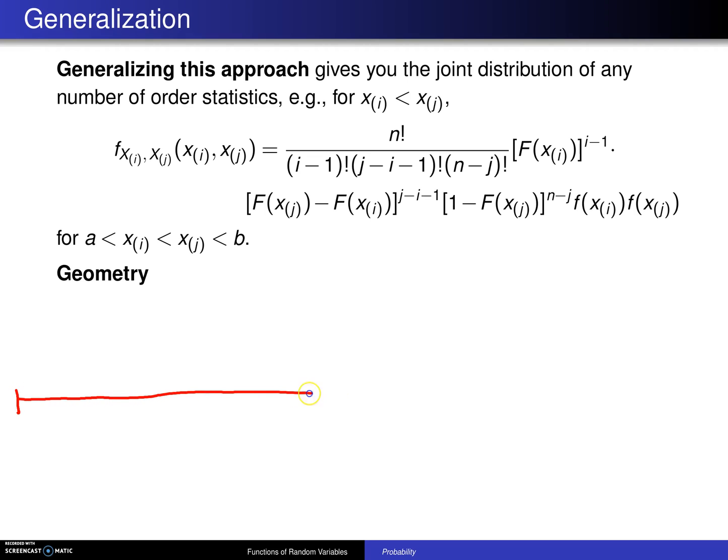The joint PDF of xi and xj will be this long expression, and here is the geometry associated with the thinking. There will be a little bit less detail this time. Here is a, here is b. Here is the i-th order statistic x sub i. Here is where the j-th order statistic x sub j falls. We know that one observation will fall here, and one observation will fall here.